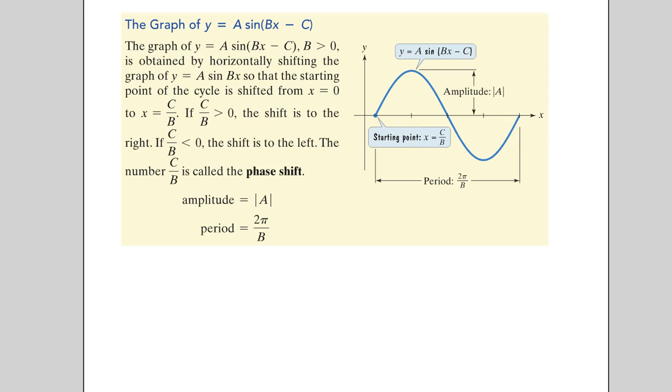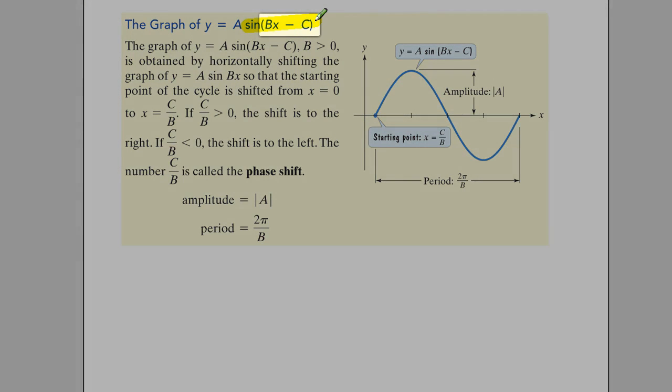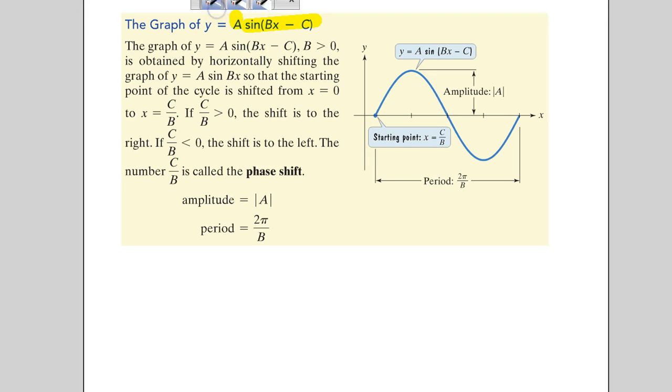So what we're going to start off with are, these are called sinusoids, so these are just sine or cosine. And in the parenthesis we've got something being added or subtracted, possibly from the x, something being multiplied by the x, and then possibly a number out front. Each one of these things has its own role in the graph of the sine and cosine function.